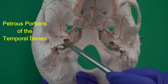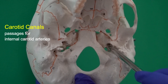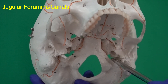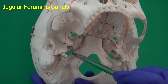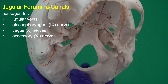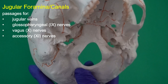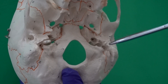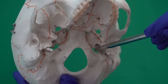From the mandibular fossa I move toward the midline and locate the petrous portion of the temporal bone. On the petrous portion I locate an important canal called the carotid canal, named simply because the carotid artery passes through it. Posterior to the carotid canal I locate the jugular foramen, which is located between the temporal bone and occipital bone. Many important structures pass through the jugular foramen, including the jugular vein and three cranial nerves: cranial nerve IX (glossopharyngeal), X (vagus), and XI (accessory).